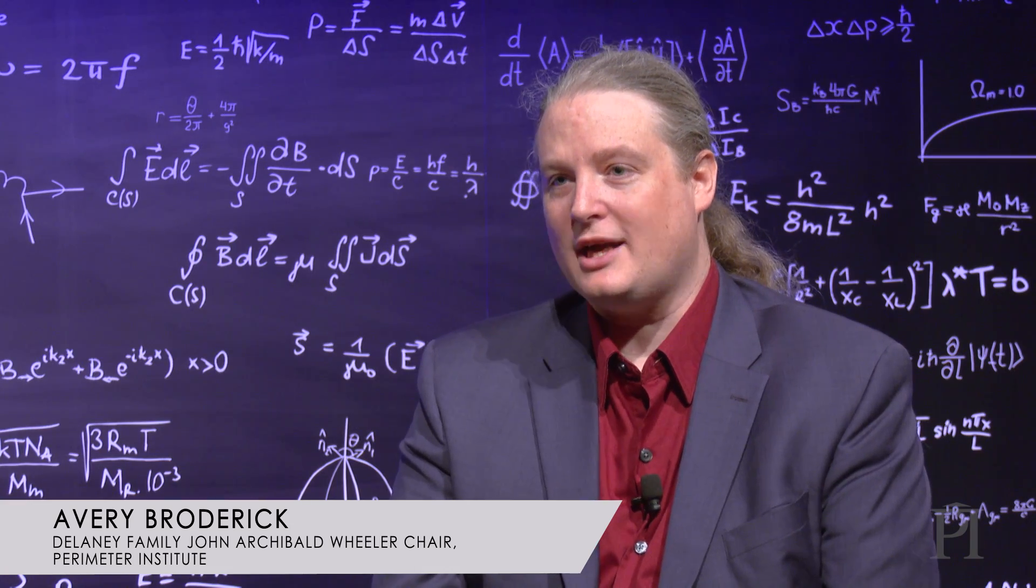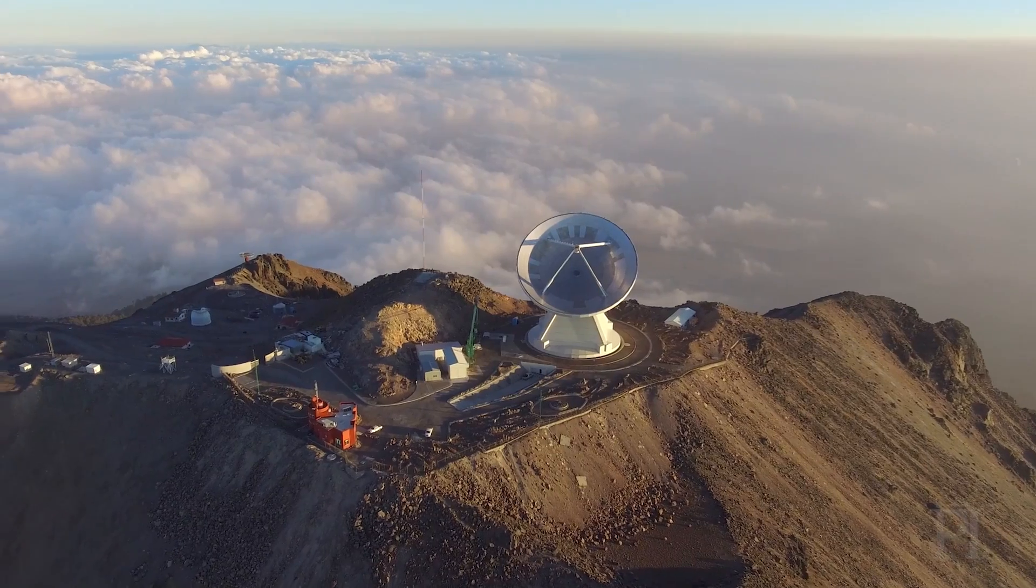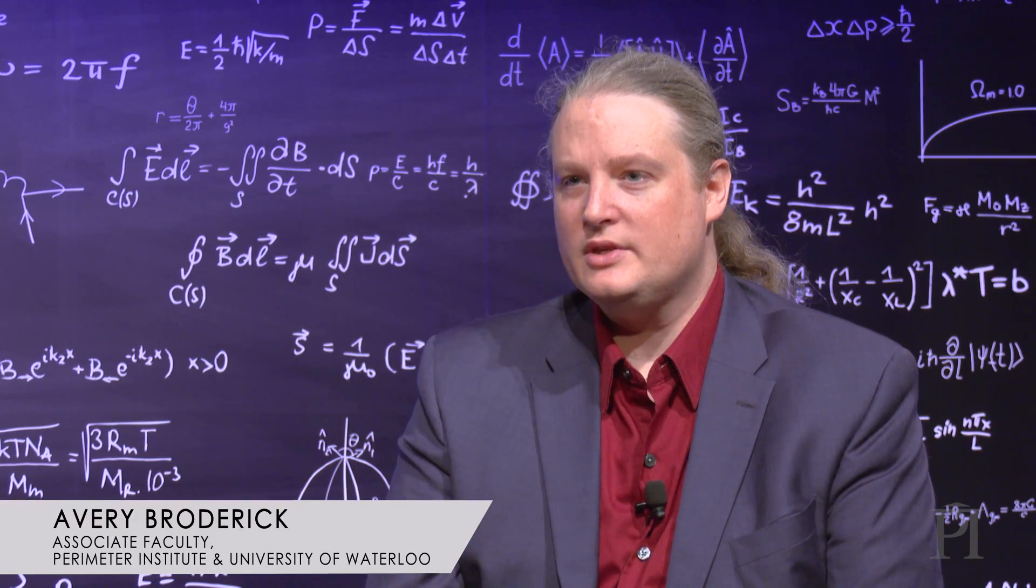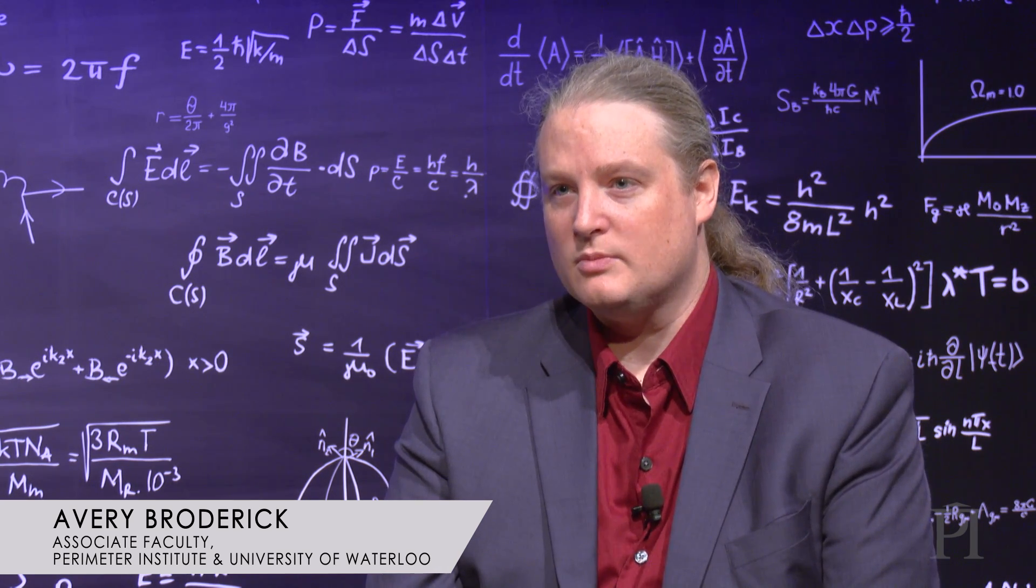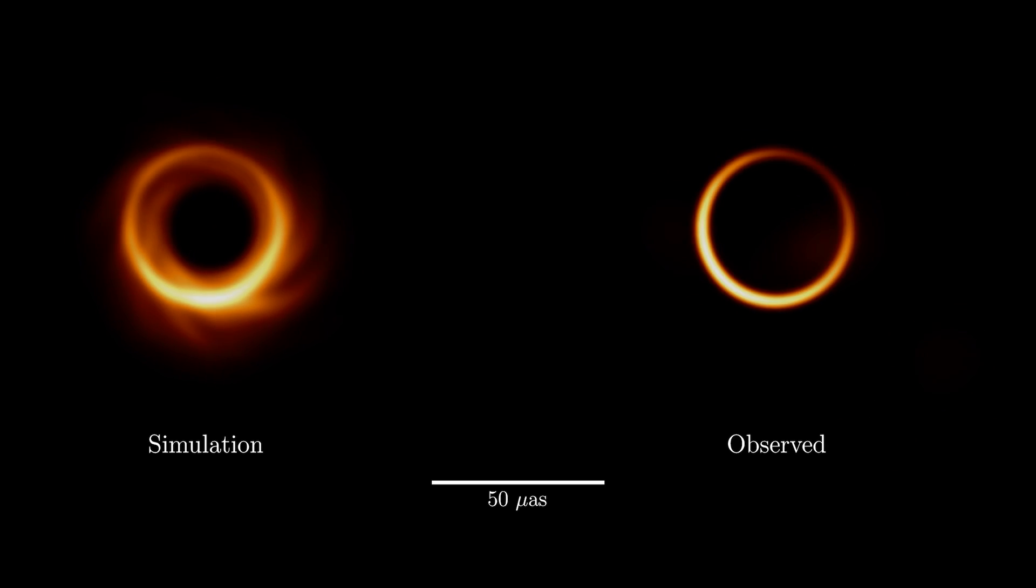The Event Horizon Telescope is really two halves, two pieces. It's as much algorithm as it is steel. We can't change the steel on the ground, but we can change the algorithm that's in the eyepiece. And in doing so, enhance the capability of the Event Horizon Telescope to pull out this extra piece that we didn't before.